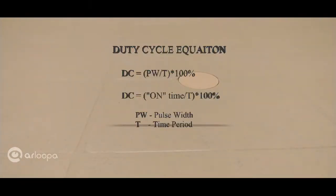All right, let's look at some math. This is a duty cycle equation. Duty cycle is nothing but the pulse width over the time period multiplied by 100 in percentage. The pulse width is nothing but the time that the signal is switched on, the active part of the signal.